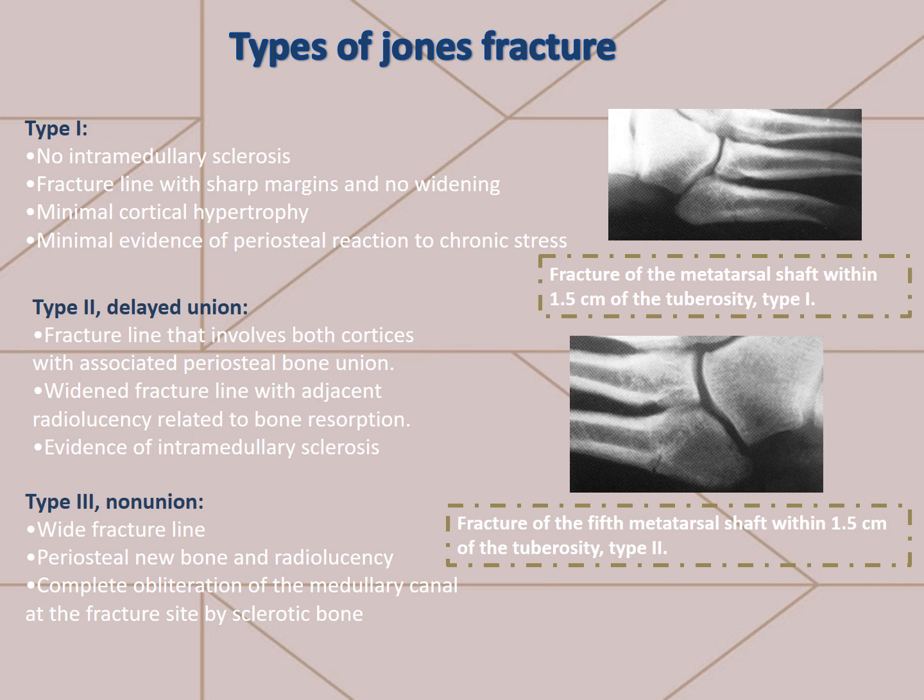Type 2, delayed union: fracture line that involves both cortices with associated periosteal bone union, widened fracture line with adjacent radiolucency related to bone resorption, and evidence of intramedullary sclerosis. In the second picture, we will see a fracture of the 5th metatarsal shaft also within 1.5 cm of the tuberosity, but type 2. This type 2 fracture includes intramedullary sclerosis, widening of the fracture line and cortical hypertrophy.